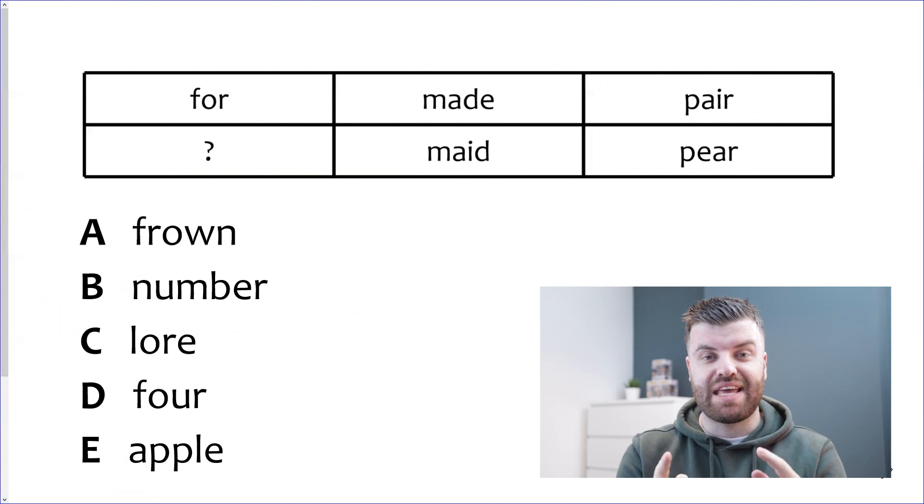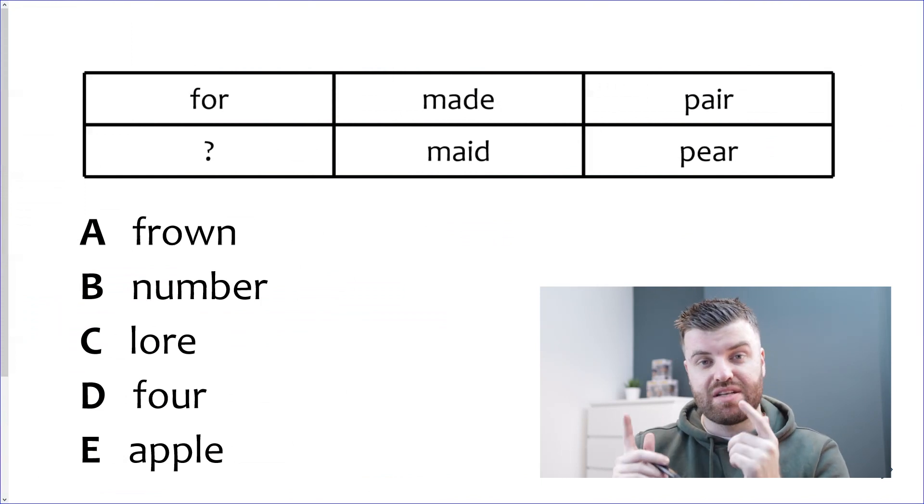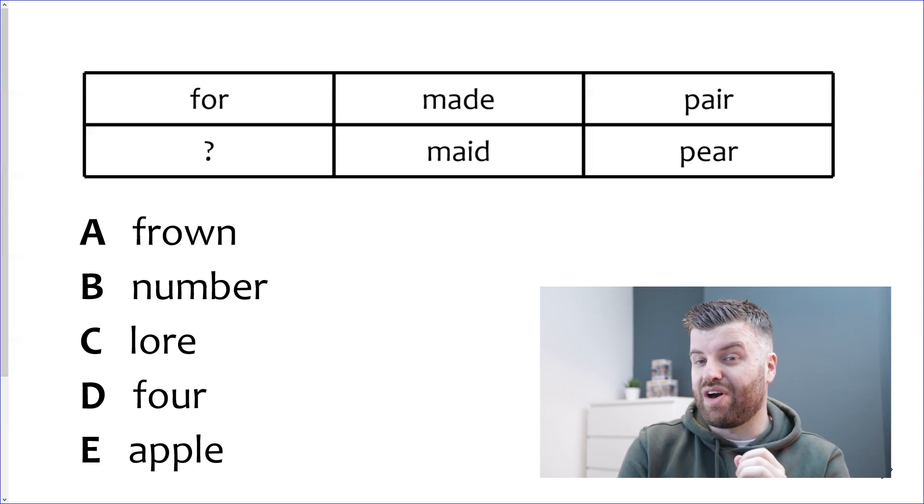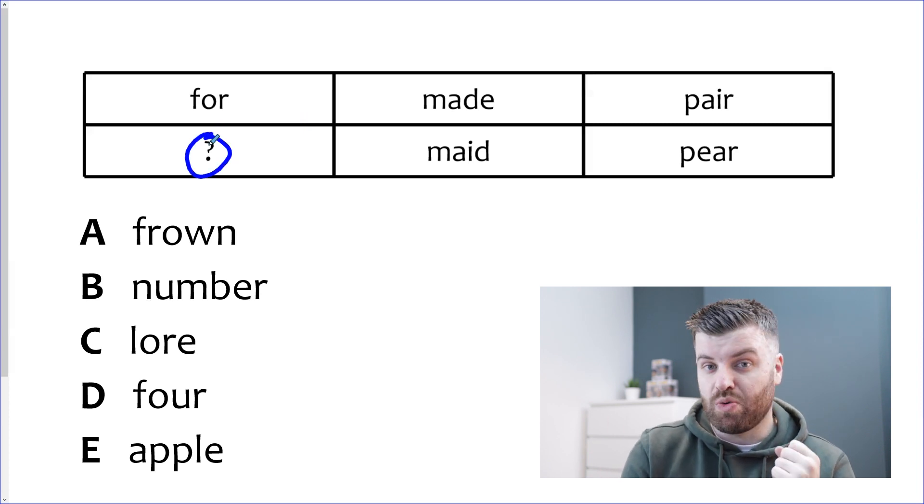In this question type you are given a three by two grid and in five of those spaces there are words that are somehow linked. It's our job to try and figure out what word can go into the gap which is denoted by a question mark. We have five to choose from as normal A, B, C, D or E.